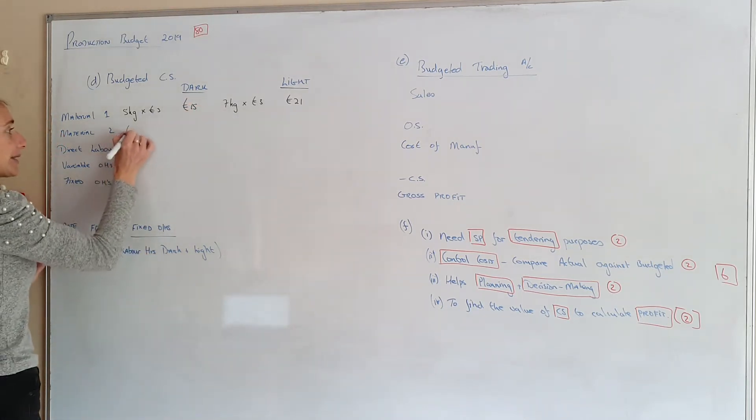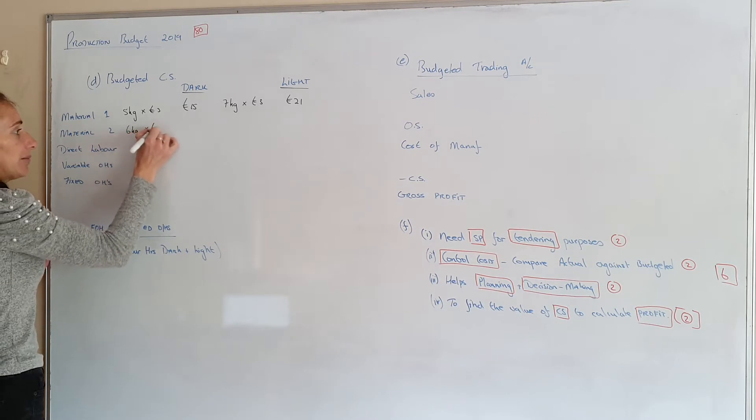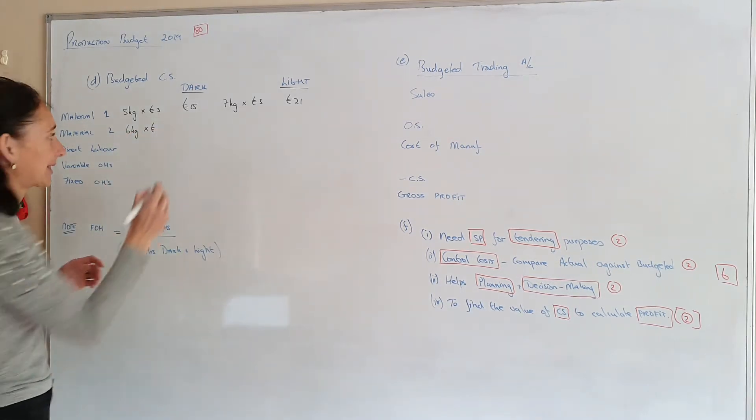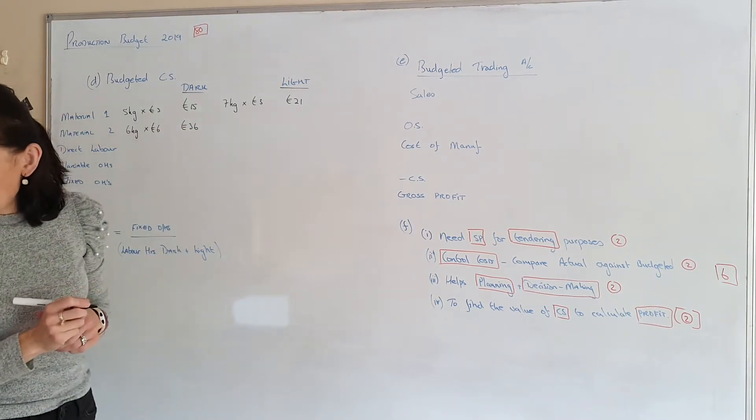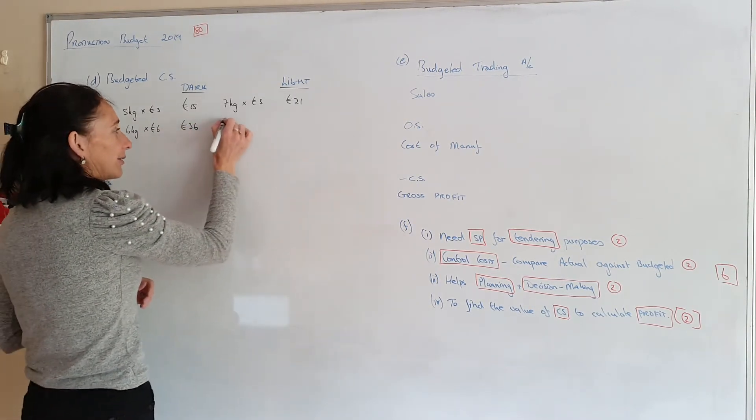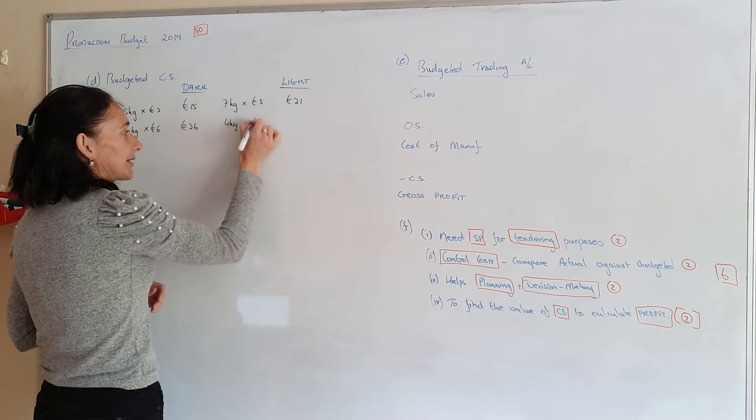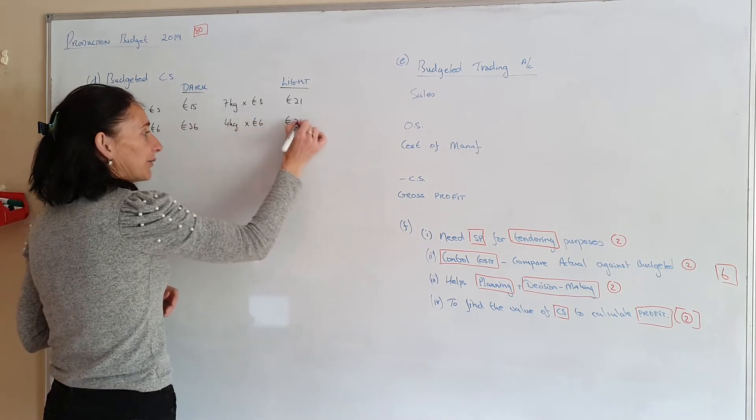For material two I need 6kg and material two is costing €6. So that's €36. And for light I need 4kg and still costing €6 which is €24.